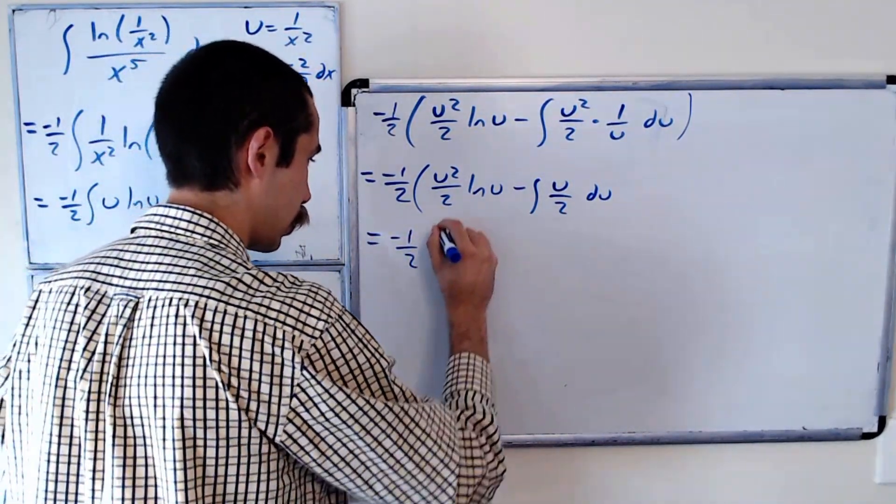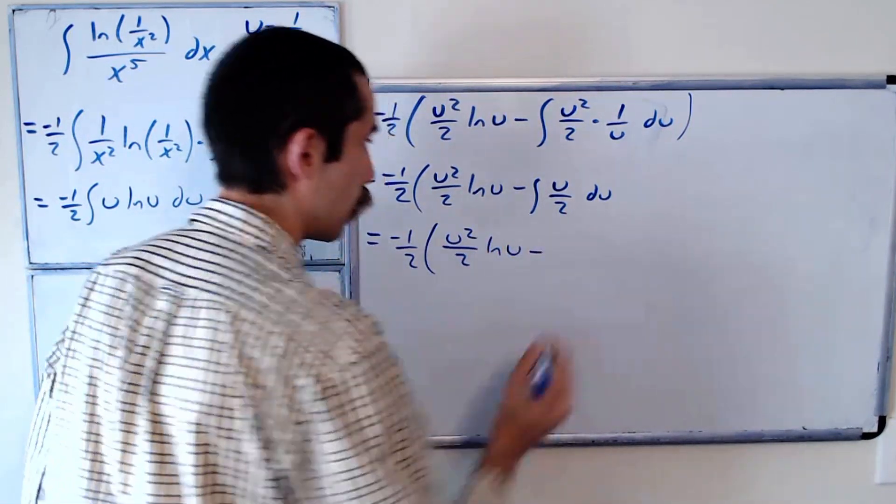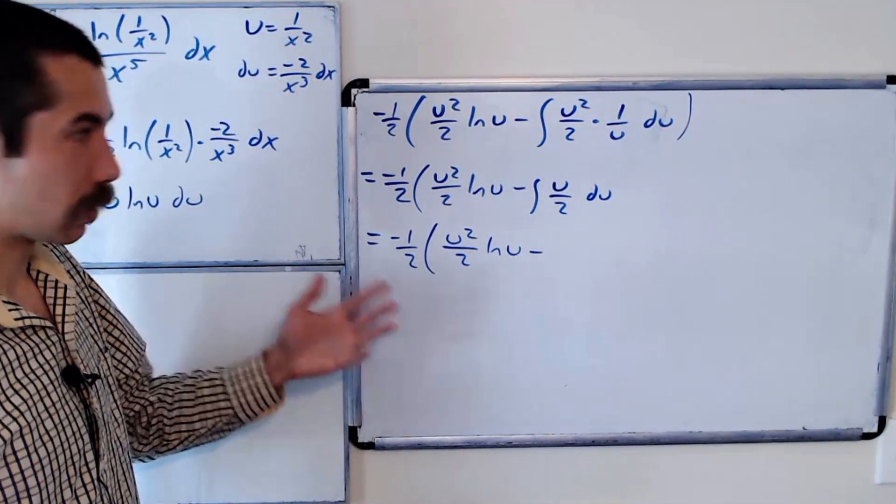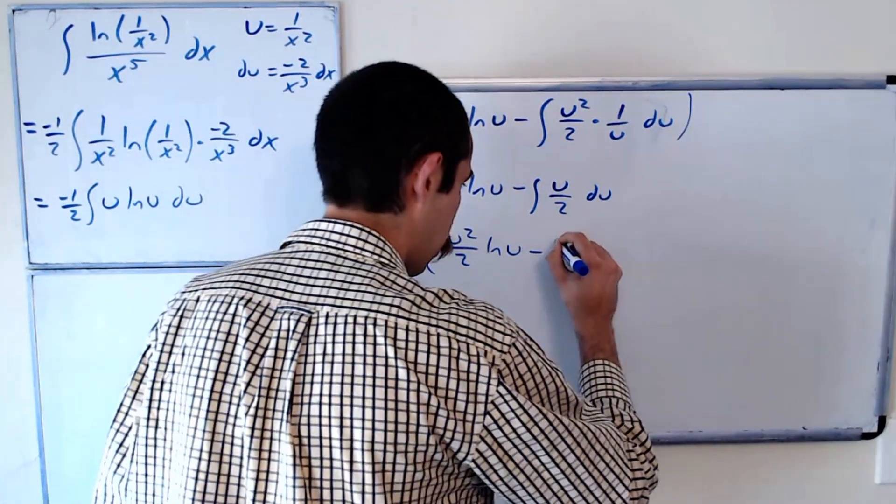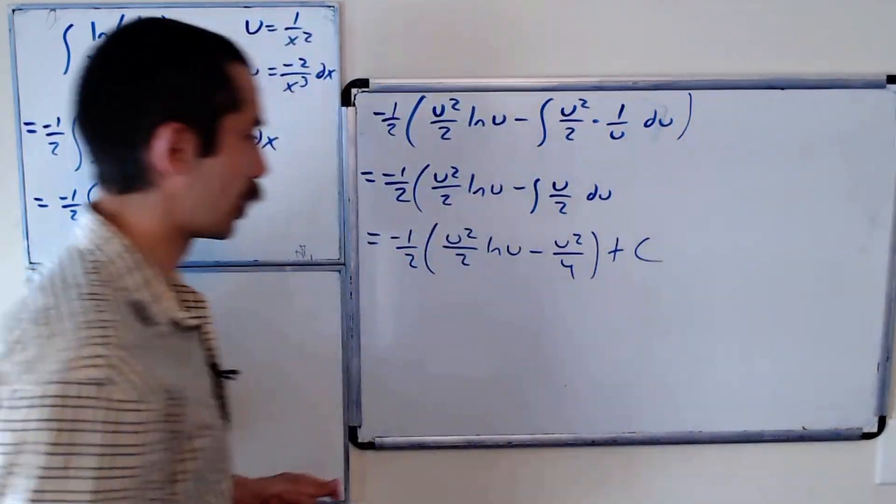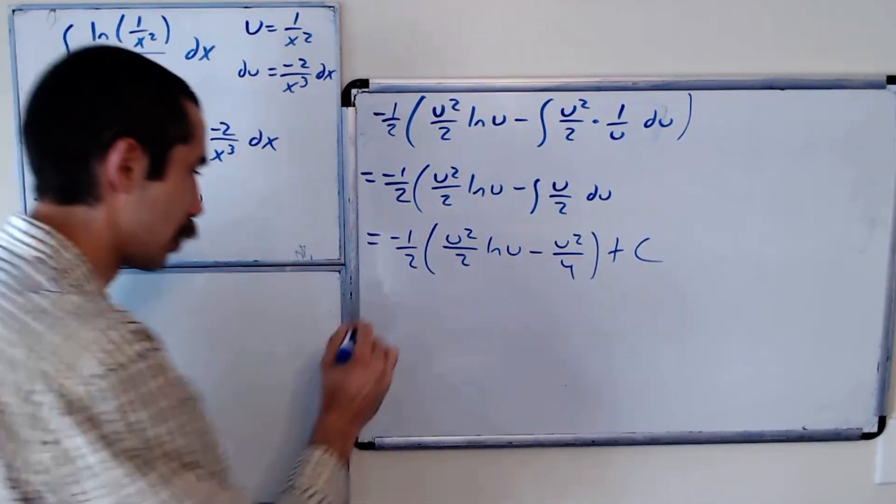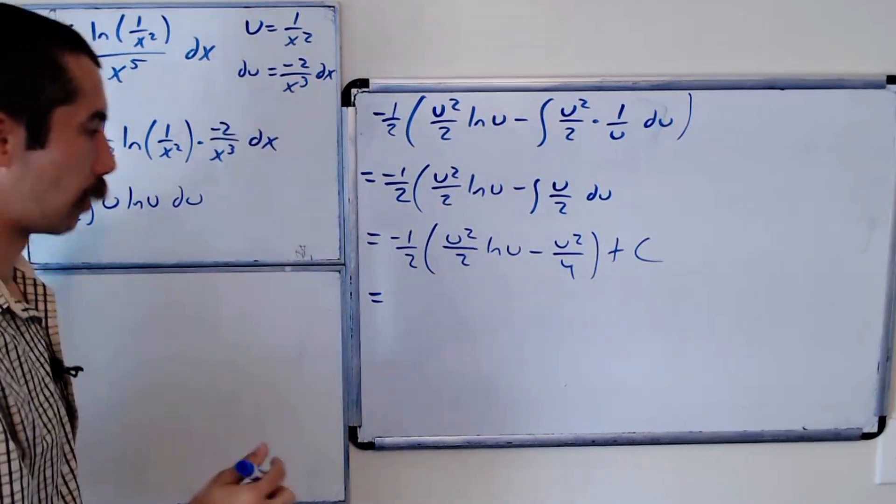Negative 1 half, u squared over 2, ln of u, minus u squared over 4. Negative 1 half, plus c, and now we could substitute in our original function, or substitute back in the x.